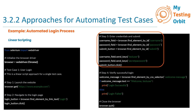In the next step, the script locates three HTML elements: the username input field, the password input field, and the submit button. It stores references to these elements in variables. Then it uses the send_keys method to simulate typing 'test user' into the username field, 'secret password' into the password field, and click to simulate clicking the submit button, submitting the login form.